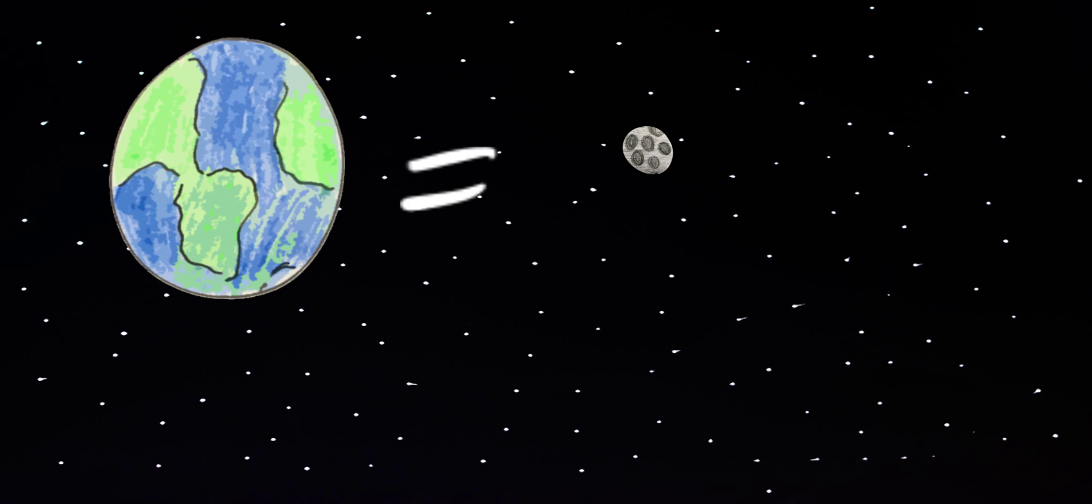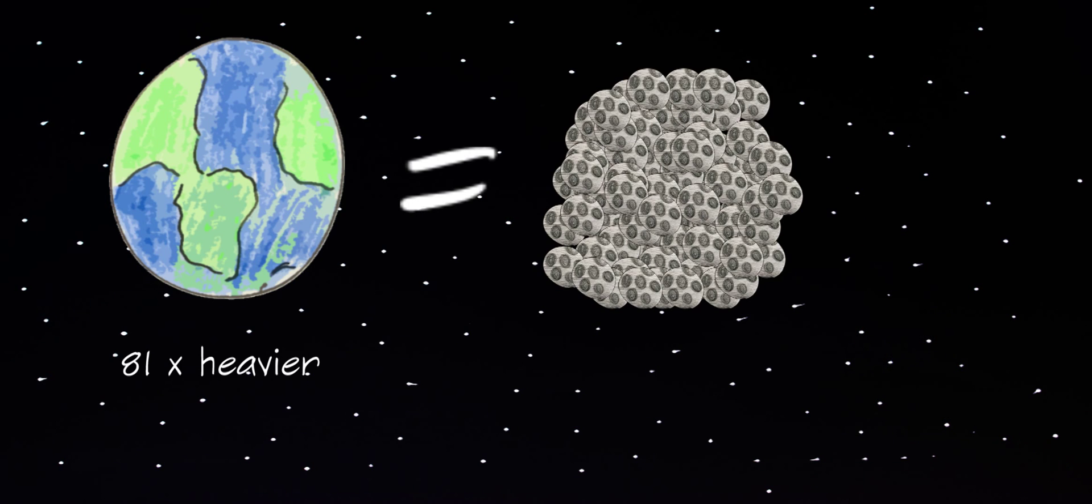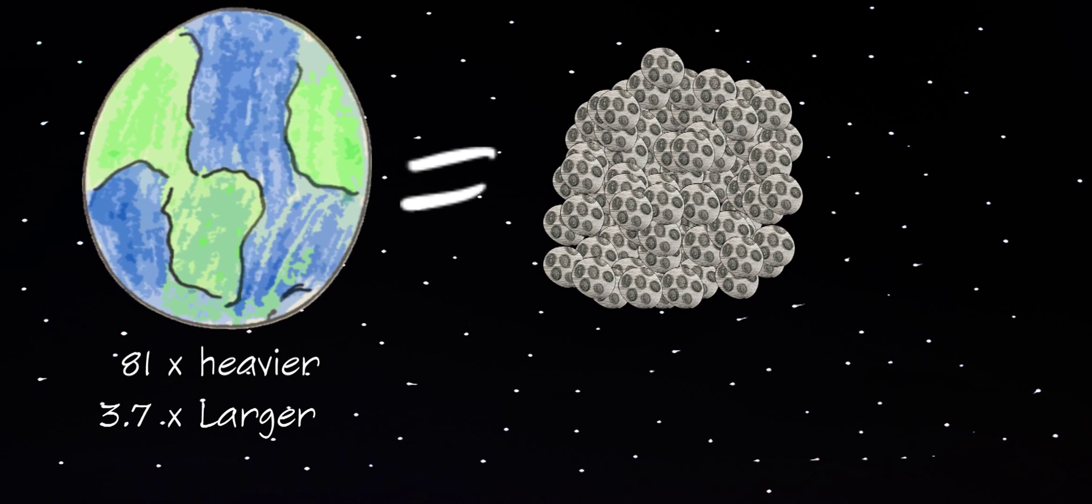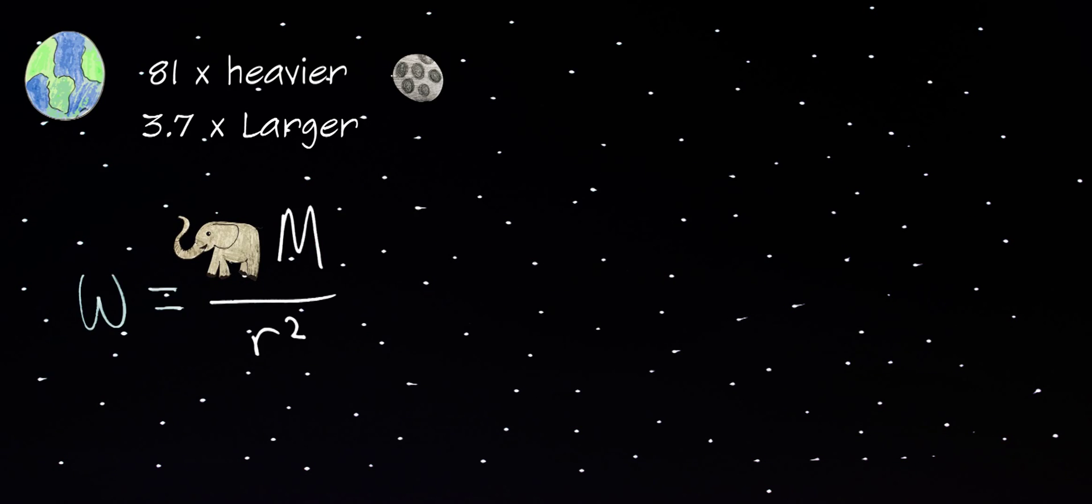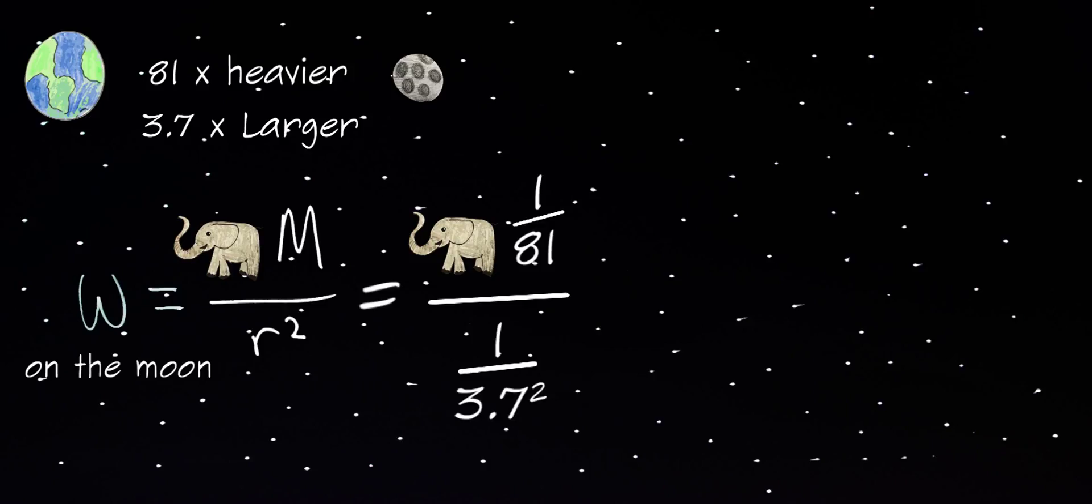Let's take the moon for example. The Earth is about 81 times heavier than the moon and about 3.7 times as large. So using Newton's formula as a guide, the elephant's weight on the moon would be 81 times smaller if we substitute the tiny mass of the moon, but 3.7 squared times larger when we account for the shorter distance from the moon's surface to its center.